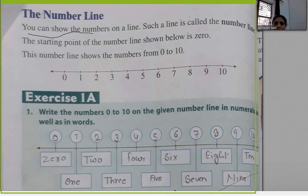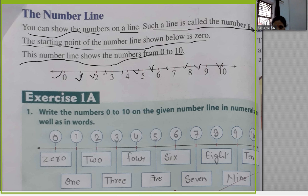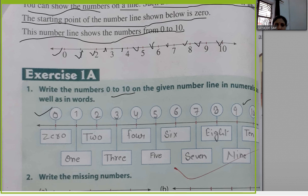Next topic: number line. You can show numbers on a line — such a line is called a number line. The starting point of the number line is zero. This number line shows numbers from zero to ten: 0, 1, 2, 3, 4, 5, 6, 7, 8, 9, 10. Write the numbers from zero to ten on the given number line, writing the numeral as well as the name.